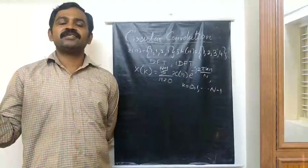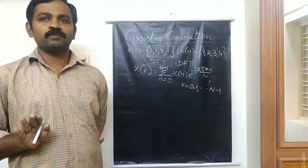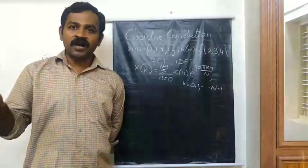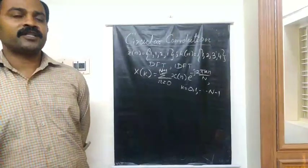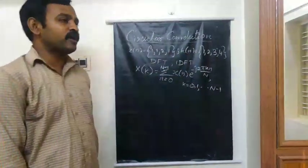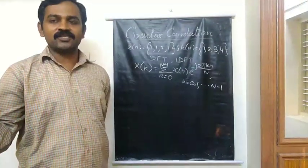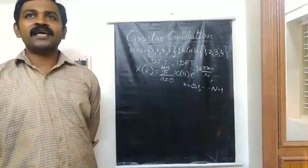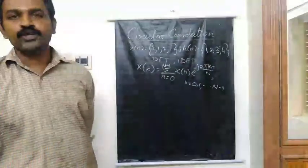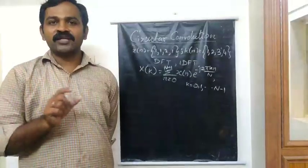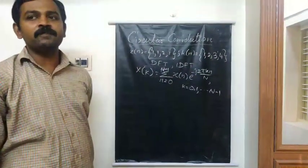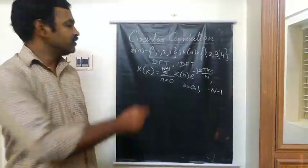In frequency domain for the signal, just you can go for multiplication operation. So multiplication is easier, addition is also there. That is overcome because the sequence is going to transform. Then you can multiply both the results.